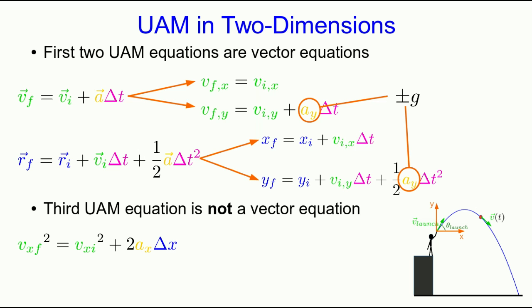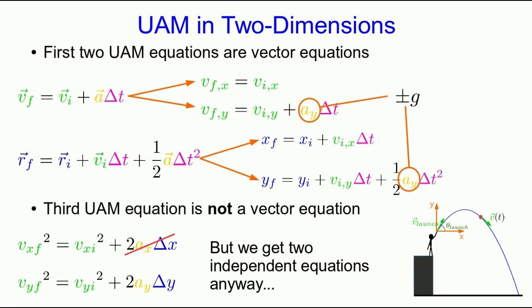The third UAM equation, though, is not a vector equation. Look at it. It appears to involve multiplication of vector components by other vector components, and so there's something going on here with vectors multiplied by vectors. Now, we know how to add and subtract vectors and we know how to multiply a vector by a scalar, but we don't yet know how to multiply two vectors together. We'll actually see that in the next video lecture. And so for now, all I'll say is that even though this isn't a vector equation, we still wind up getting two independent equations anyway. The first one again is trivial and totally useless, but the second one we can use.